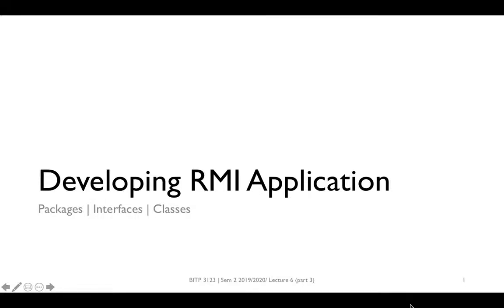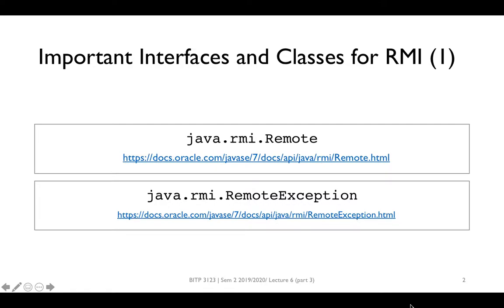We have seen the RMI architecture. Now we shall have a look at the packages, classes and interfaces used to develop an RMI application. The Java RMI framework consists of interfaces and classes that can be used to develop an RMI application. In this lesson, we will cover important classes and interfaces sufficient for a simple RMI application. In this slide, we have an interface called Remote and one exception class named RemoteException, both from the java.rmi package. These two are used to define the server object interface, the component we have seen in the RMI architecture.